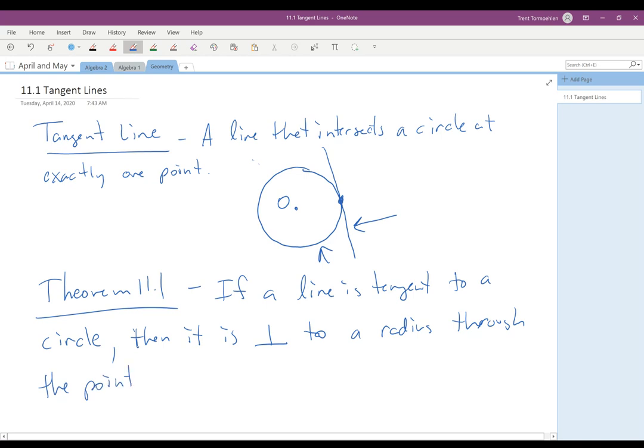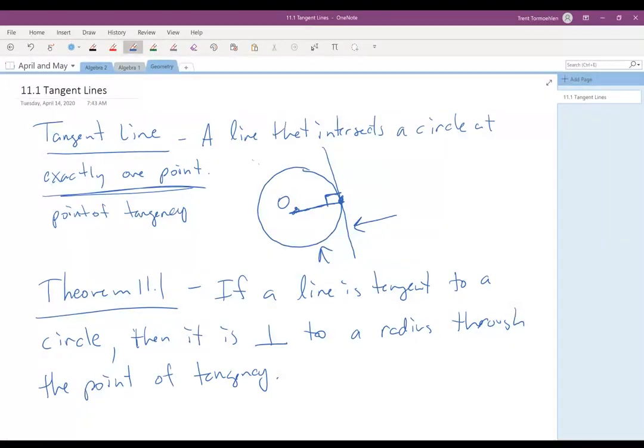Then it is perpendicular to a radius through the point of tangency. Now, point of tangency is that single point, right? The exactly one point is called the point of tangency. So from this radius to that tangent line, you have a right angle, and that right angle is going to be very, very, very important to us.